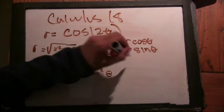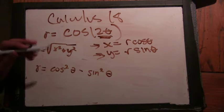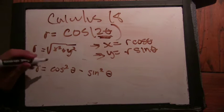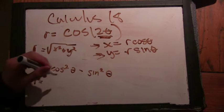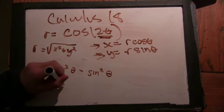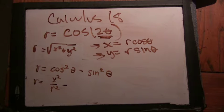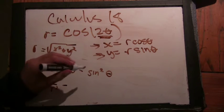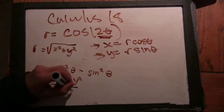So maybe we can say, since cos(θ) is x/r, cos²(θ) would be x²/r². So we have x²/r² - y²/r².